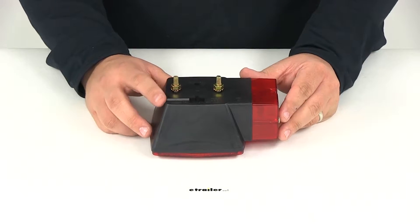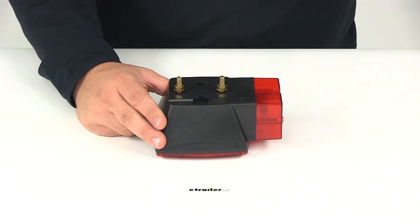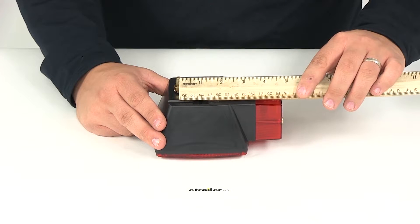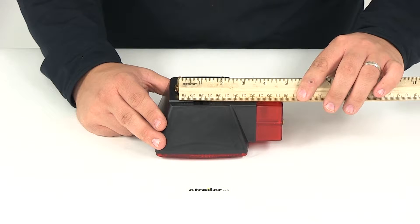The light stud mounts on the right side of the trailer with two studs exposed here on the back of the housing. Taking a measurement, the distance between the two, center on center, is going to measure right on two inches.